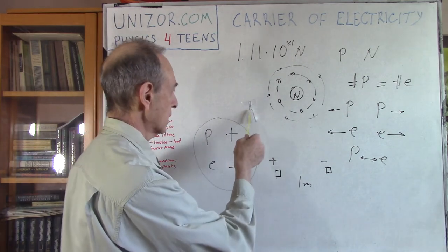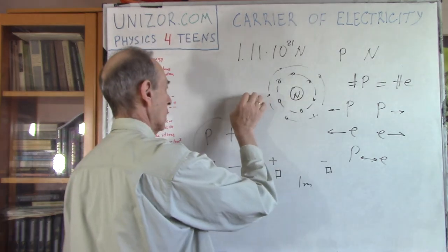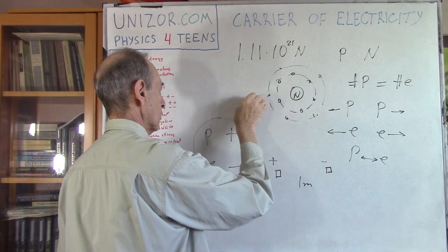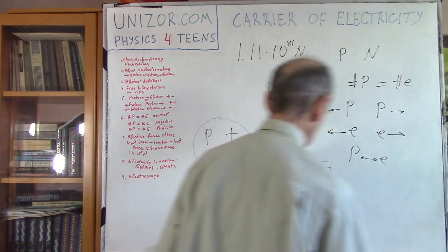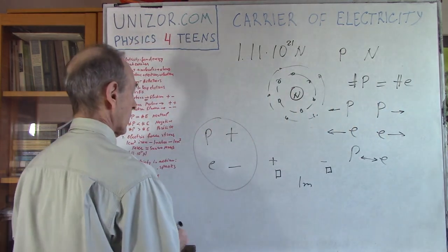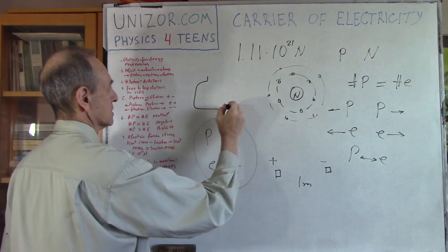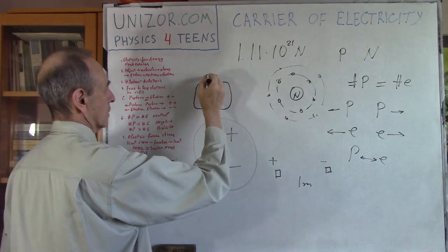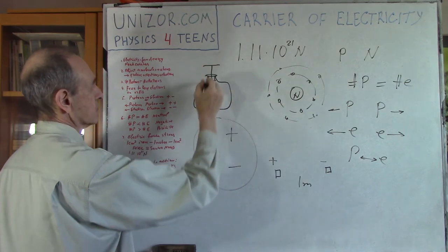What I just showed is basically the reason for a device called an electroscope. What is an electroscope? It's a device that looks like you have some kind of a glass container, with a cork at the top, and a metal disk on top of that.